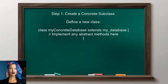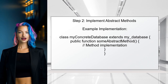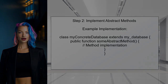To resolve the issue of instantiating an abstract class, the user needs to create a concrete subclass that implements all abstract methods. This means defining a new class that extends MyDatabase and provides implementations for any abstract methods. Since MyDatabase is abstract, it may have abstract methods inherited from Database that need to be defined.